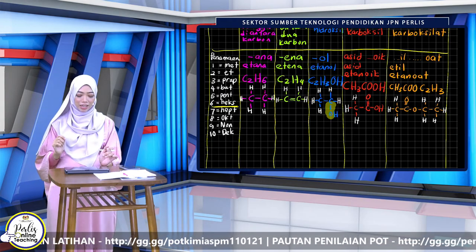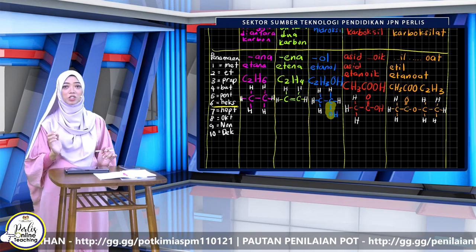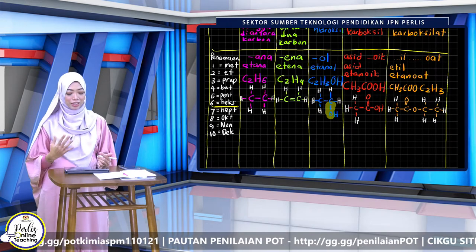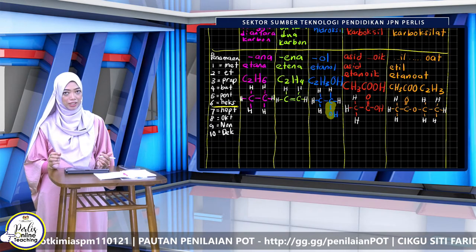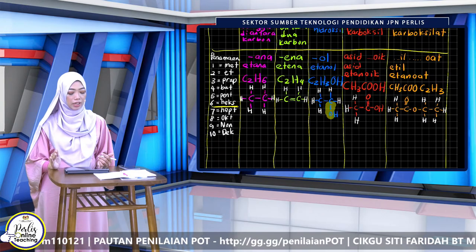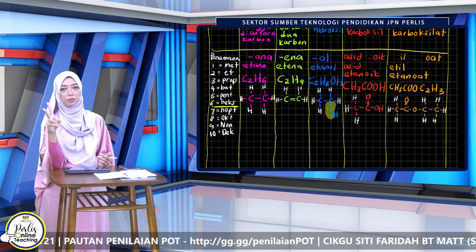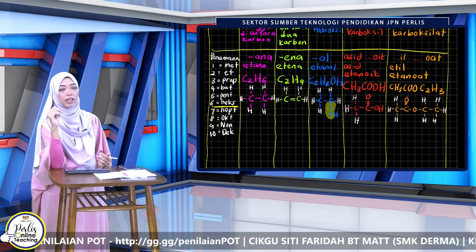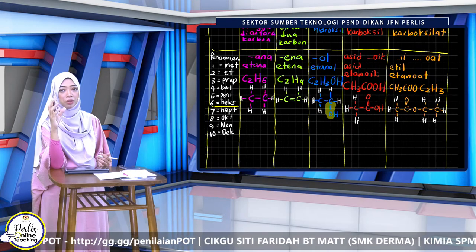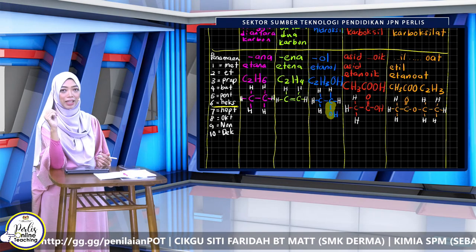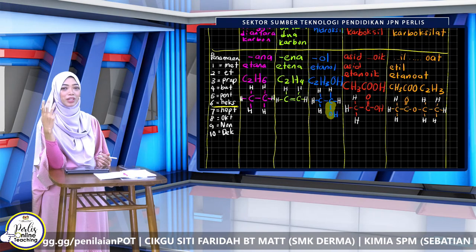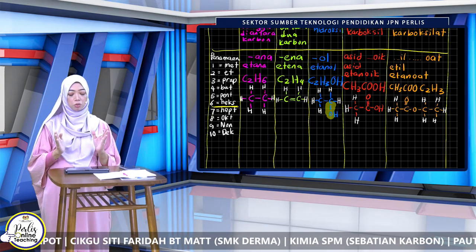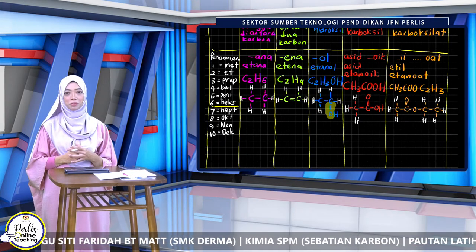Cikgu ajar yang basic sahaja. Kita biasanya melukis karbon dahulu. Tengok nama — kalau 'et', etana: et menunjukkan dua karbon. Buat C dahulu, ada dua C. Kemudian setiap karbon itu kita penuhkan ikatannya supaya ada empat ikatan, dan barulah kita masukkan atom hidrogen. Itu untuk alkana yang tidak ada kumpulan berfungsi — sebab kumpulan berfungsi alkana adalah ikatan tunggal.